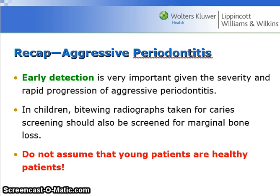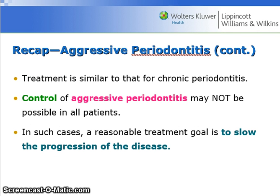Recap of aggressive periodontitis: early detection is very important given the severity and rapid progression. In children, bite-wing radiographs taken for caries screening should also be screened for bone loss. Do not assume that young patients are healthy patients. Treatment is similar to that for chronic periodontitis, and control of aggressive periodontitis may not be possible in all patients. In such cases, a reasonable goal is to slow the progression of disease.